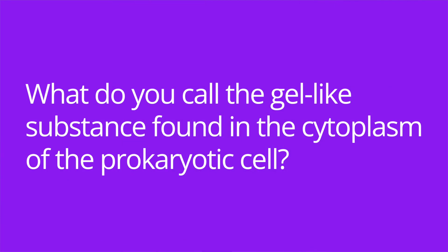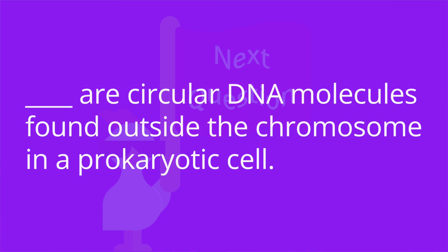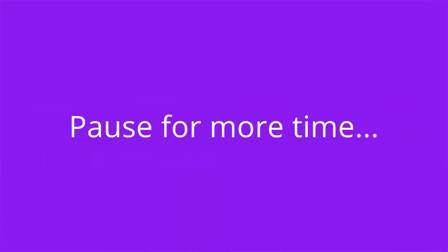It's quiz time, and I have five questions for you. Question number one: what do you call the gel-like substance found in the cytoplasm of the prokaryotic cell? The answer is cytosol. Number two: blank are circular DNA molecules found outside the chromosome in a prokaryotic cell. The answer is plasmids.